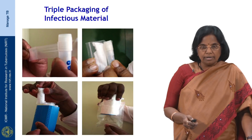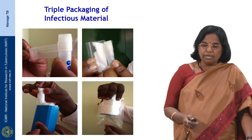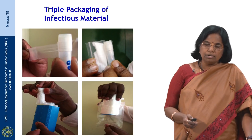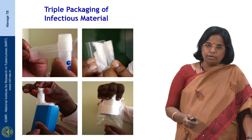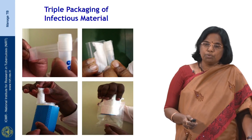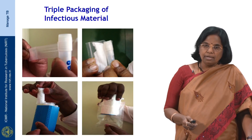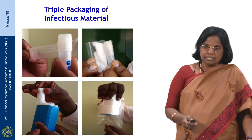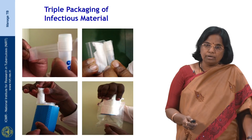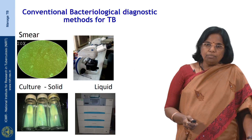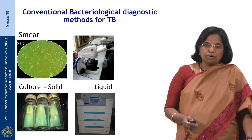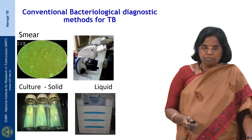Both these should be placed in a third larger container, which will have ice packs to maintain the temperature at 4 to 8 degrees C for transportation. This third container has to be properly sealed and labeled with biohazard signs before being transported by courier or post. We will now come to the conventional bacteriological diagnostic methods for TB.